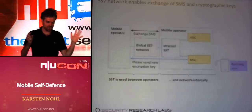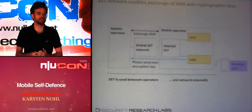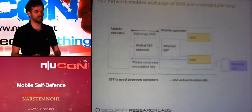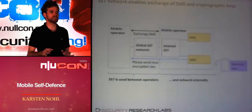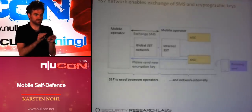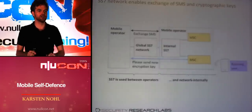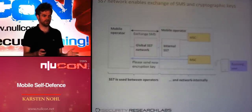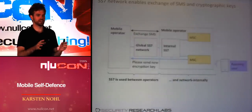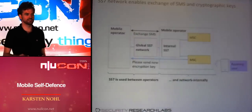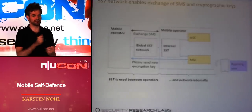Aside from this global SS7 network that connects all different telcos to one another, there's also an internal SS7 network. It's not just an interconnect technology for different companies to speak to each other — it's also for different parts of one company to speak to each other. For instance, different regions coordinate on handing over a phone call. If you're driving out of one area into another, they have different HLRs, and somehow all these HLRs have to coordinate on getting the right subscriber data handed over.